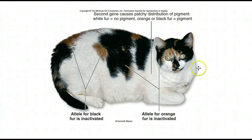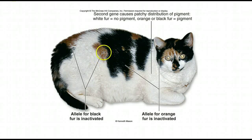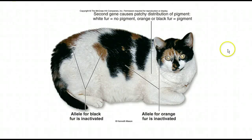Another cool example is calico cats. It turns out that calico cats are almost always female unless there's some sort of nondisjunction. There are a couple of genes going on — one that either allows pigment or doesn't, which is why you get the splotches. In calico cats, the orange areas are where the gene for black fur color has been inactivated, and the black areas are where the gene for orange fur has been inactivated. It's a macroscopic example of this mosaic nature of females.